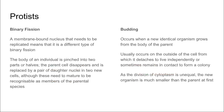In protists we have binary fission and budding. Binary fission in this case is when we replicate the nucleus, which is a different type to our usual type of binary fission, and then we see the body of an individual pinched into two parts. The parent cell then disappears and is replaced by a pair of two daughter nuclei in two new cells.